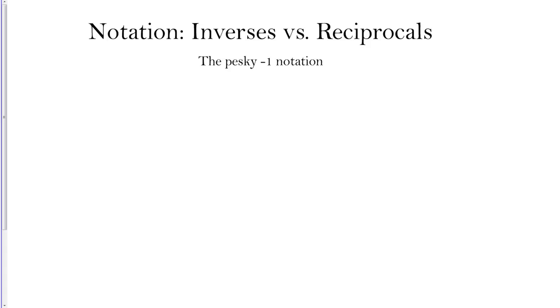In this video I want to talk briefly about the notation of inverses and reciprocals. This notation can often be a little confusing. Understandably, inverses and reciprocals both use the same symbol, this negative one symbol, but the placement of that symbol in the context is important in determining whether it's talking about an inverse or a reciprocal. For example,